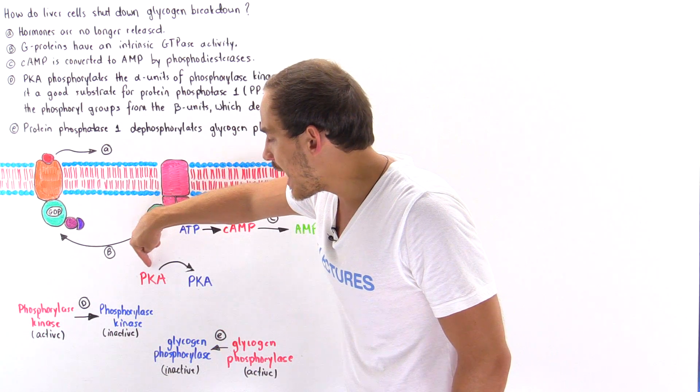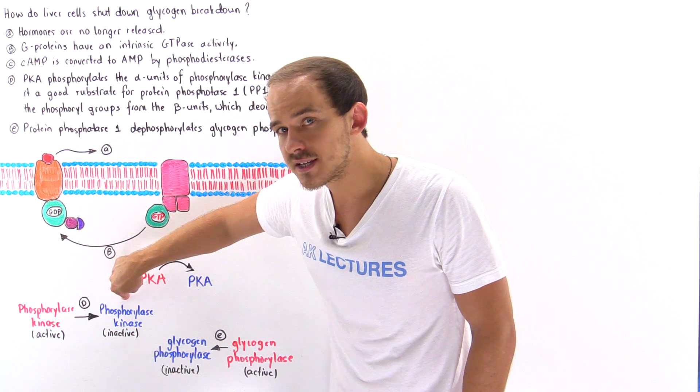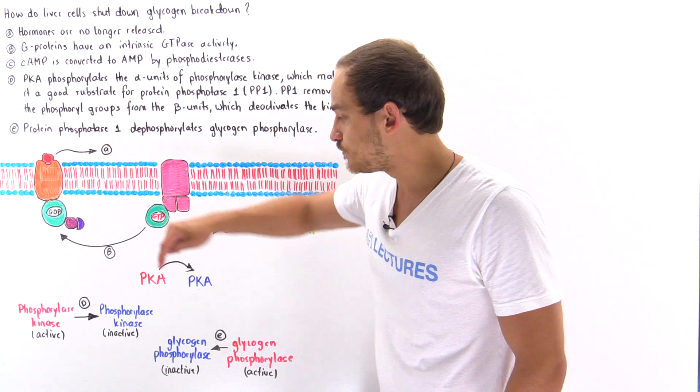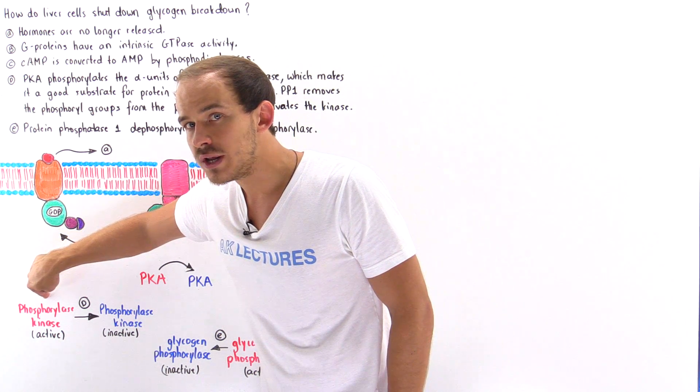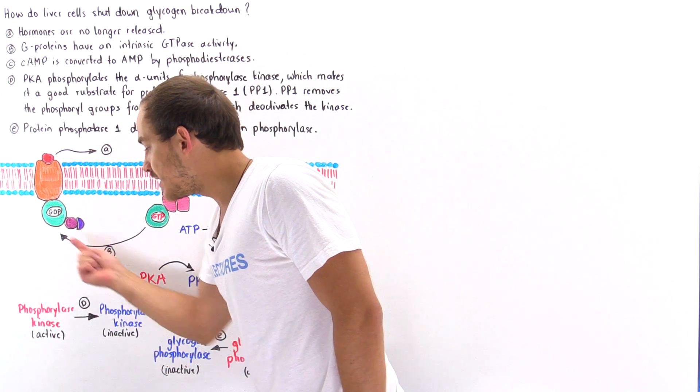When PKA phosphorylates the beta subunits, that activates this, but when PKA phosphorylates the alpha subunits, that causes the phosphorylase kinase to become a good substrate for another protein known as PP1, which stands for protein phosphatase 1.